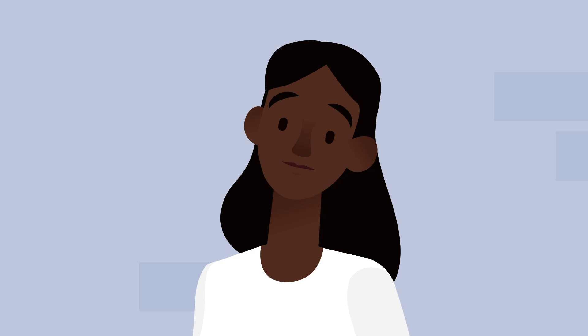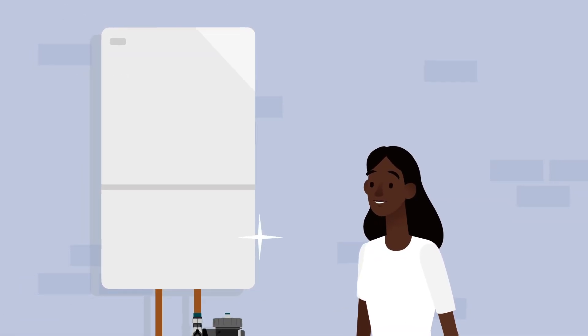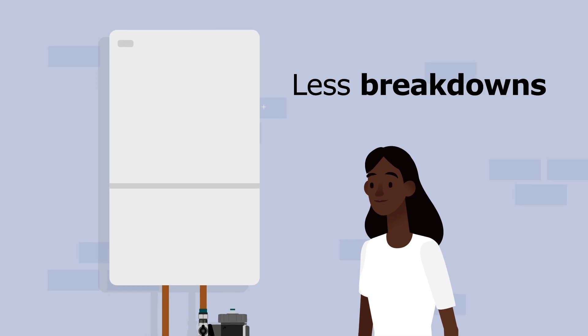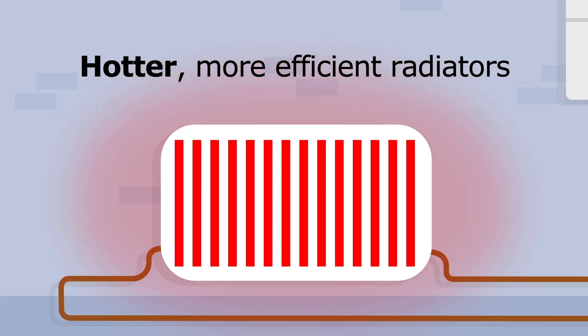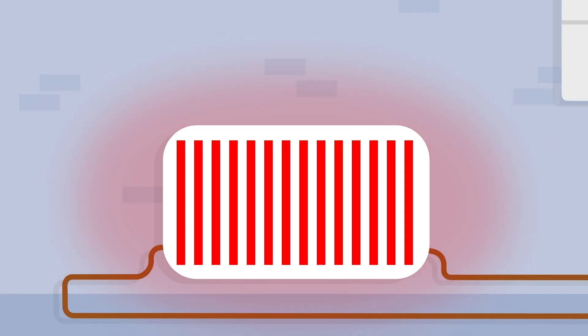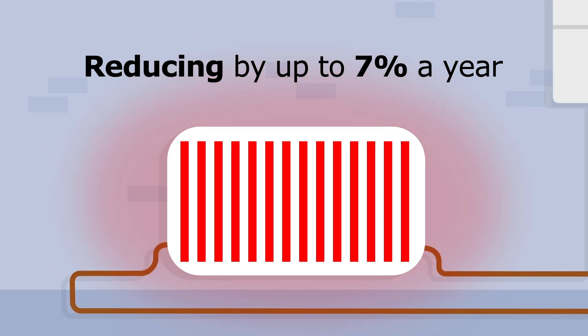You will see a real difference after a MagnaClean system clean. Your boiler will become more reliable with less chance of breakdown. Radiators will get hotter, making your home warmer without using more energy, and as a result you could see your energy bills reducing by up to seven percent a year.